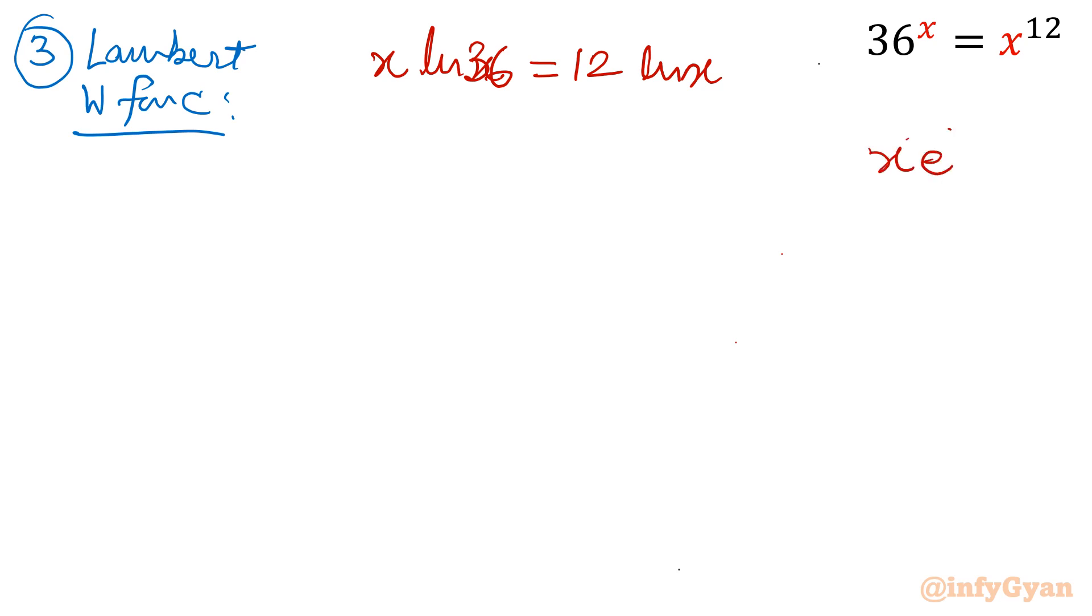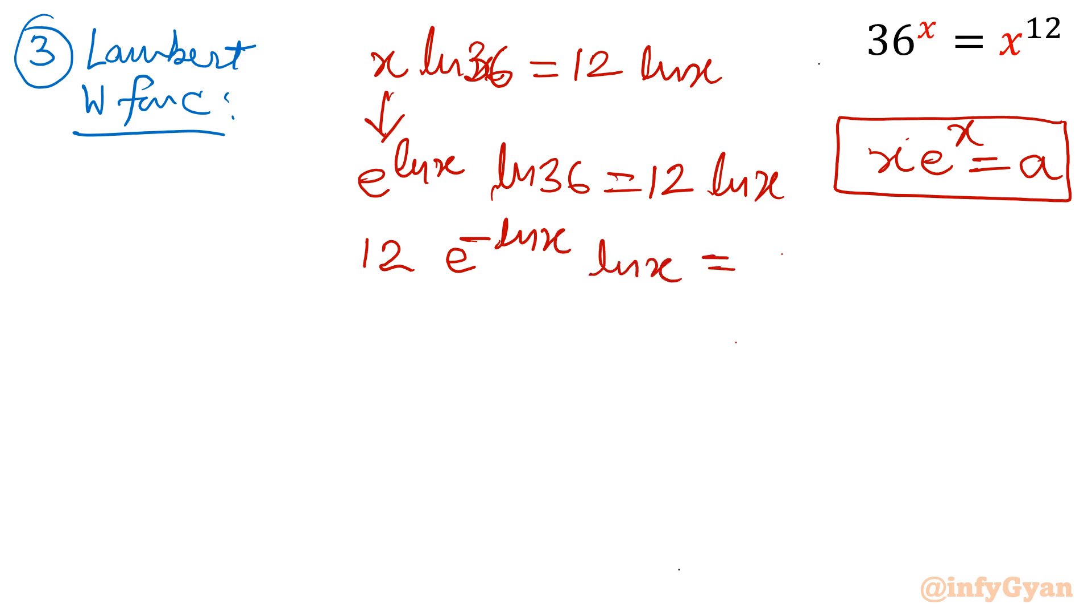Now objective is to match with the standard form of Lambert W function, x e raised to the power x is equal to a. This is our objective. I will write this x as e power ln x. We can write in the exponent form ln 36 equal to 12 ln x. Divide by e raised to the power ln x both sides. So once I will divide, equation will convert into 12 times e raised to the power minus ln x, ln x equal to ln 36.